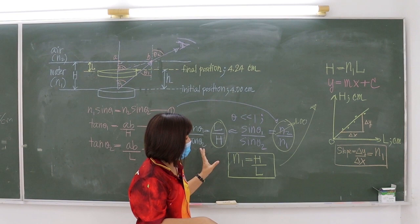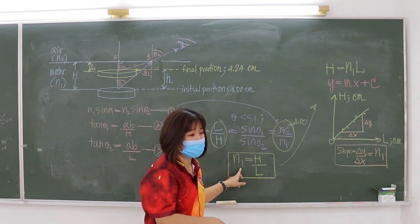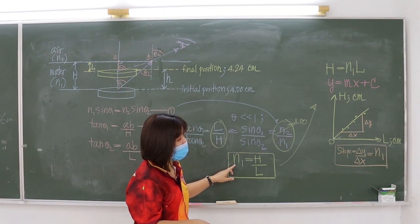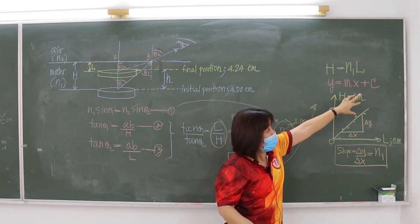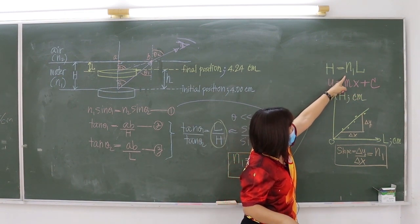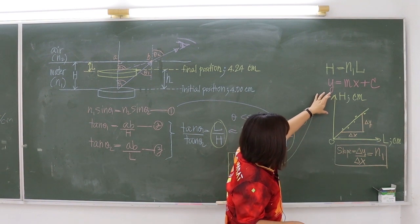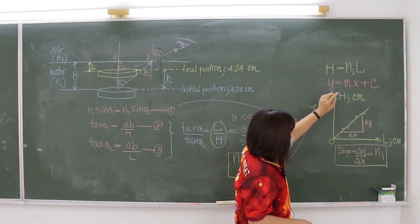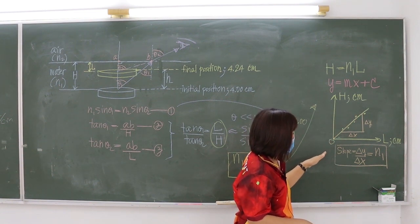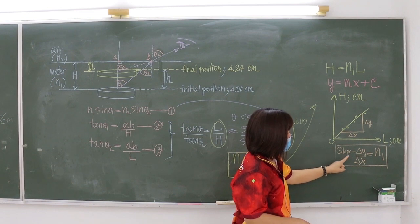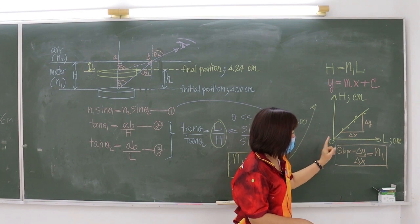You also need to plot a graph. Since H equals N1 times L, this is a linear equation in the form Y equals Mx plus C. The Y-axis is H and the X-axis is L. The graph gives a straight line, and the slope M equals N1, so you can determine N1 from the slope.